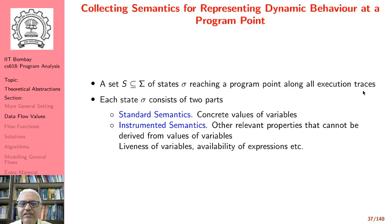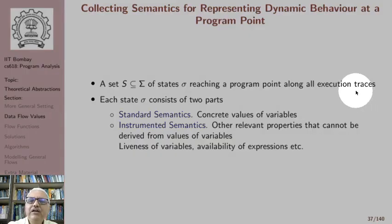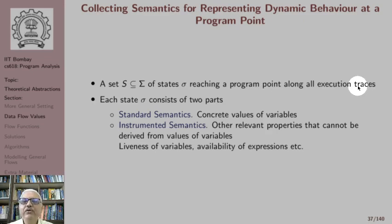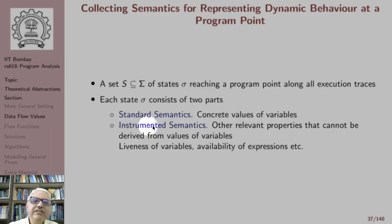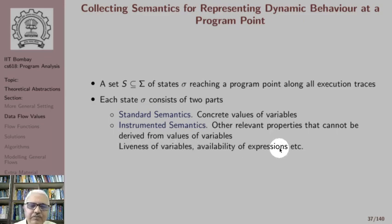The dynamic behavior or the run time behavior of a program at a program point is represented by a set of states, where each state is denoted sigma, reaching a program point along all execution paths. Each state sigma consists of two parts: the first part is standard semantics, represented by the concrete values of variables at run time; and the second part is instrumented semantics, which represents other relevant properties that cannot be derived from the values of variables — for example, liveness of variables or availability of expressions.